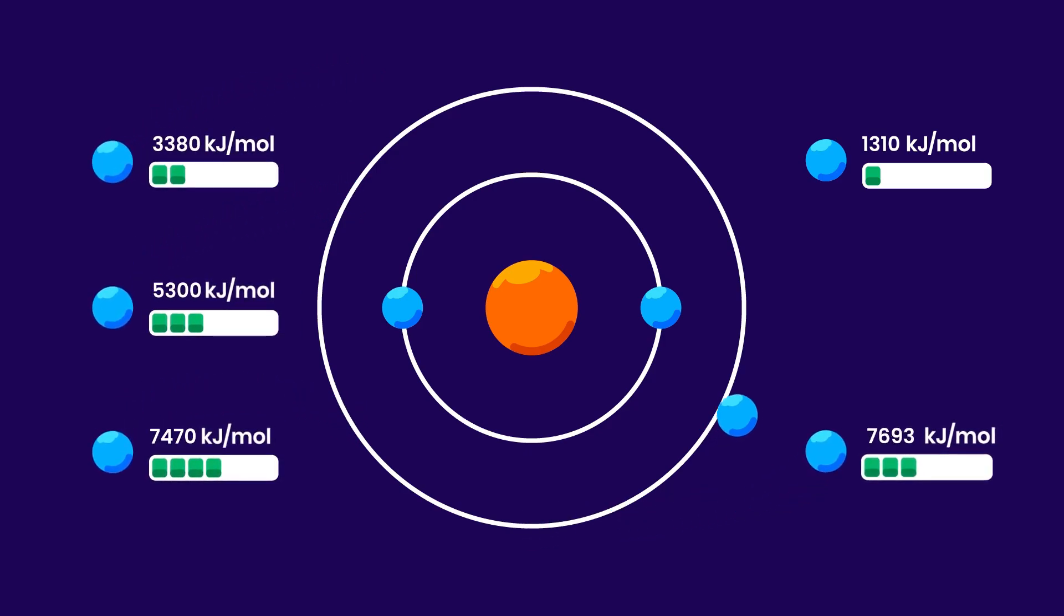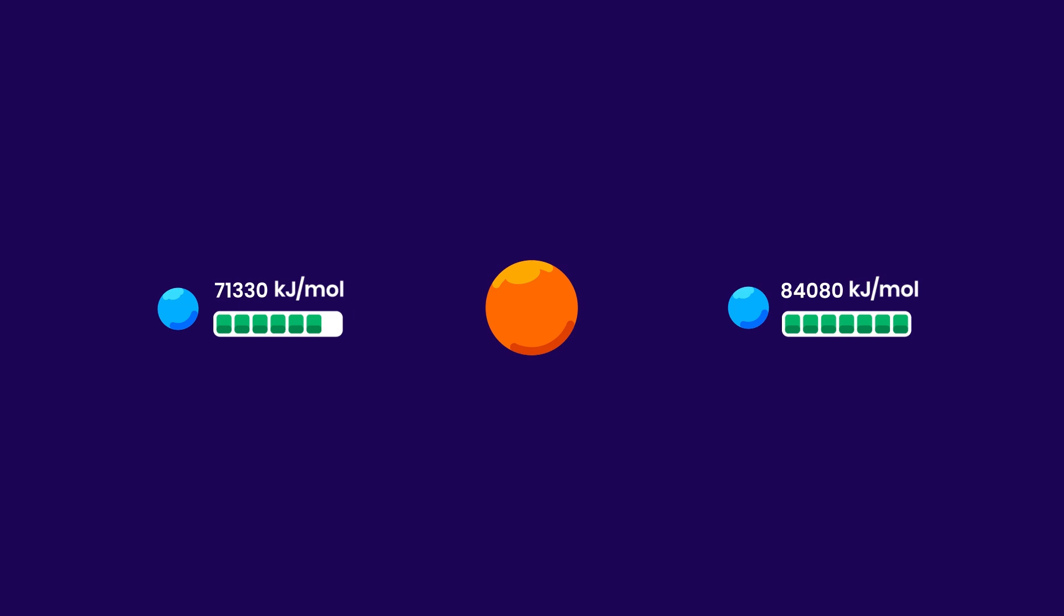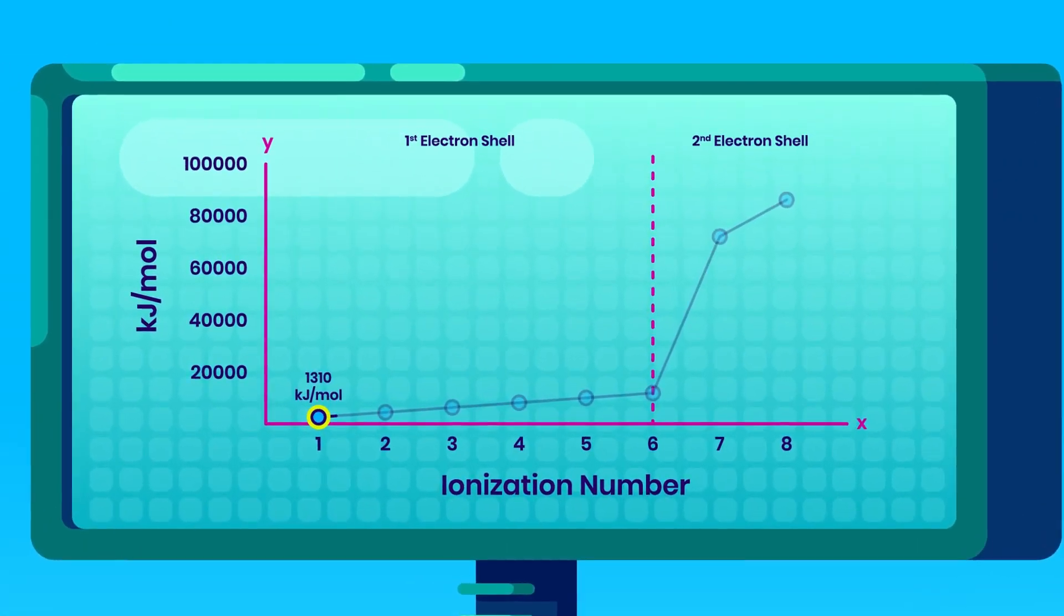The successive ionization energy increases because with each electron removal, the atom becomes smaller. This leads to a stronger attraction from the positively charged nucleus, demanding more energy to remove the subsequent electron. This means the first ionization energy is lower than the second, and the second is lower than the third, and so forth. You should note that you'll see a significant jump each time you transition to a new shell.